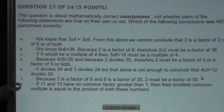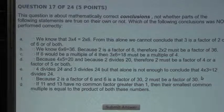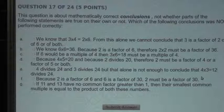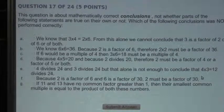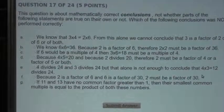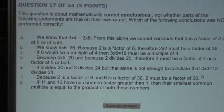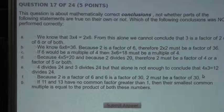Now let's look at Statement G. If 11 and 13 have no common factor greater than 1, then their smallest common multiple is equal to the product of both these numbers. It is well known that the product of any two numbers is equal to the product of their greatest common factor and their lowest common multiple.